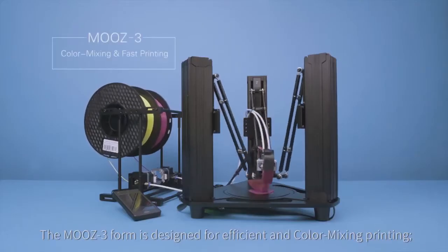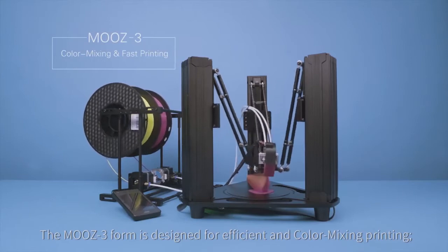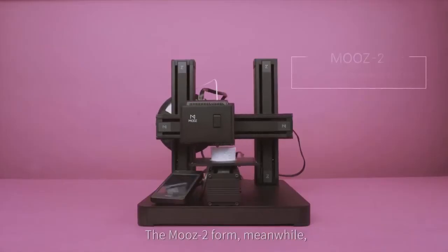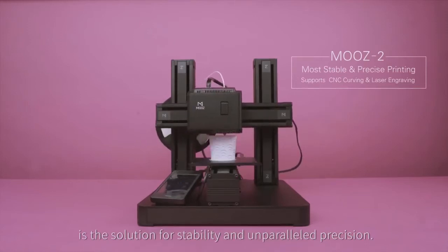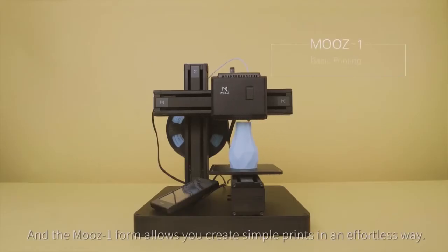The Moose 3 form is designed for efficient and color-mixing printing. The Moose 2 form, meanwhile, is the solution for stability and unparalleled precision. And the Moose 1 form allows you to create simple prints in an effortless way.